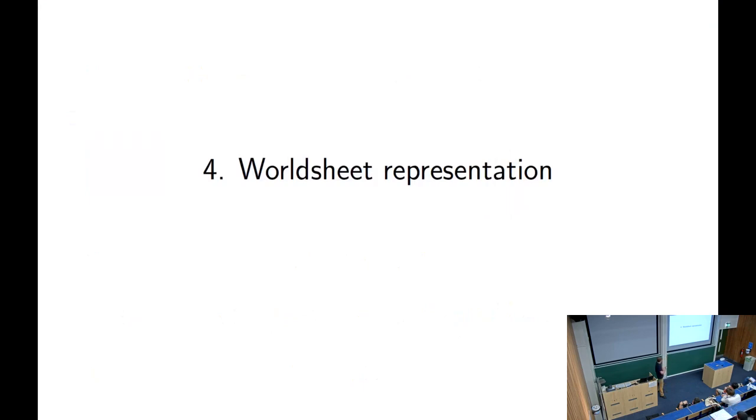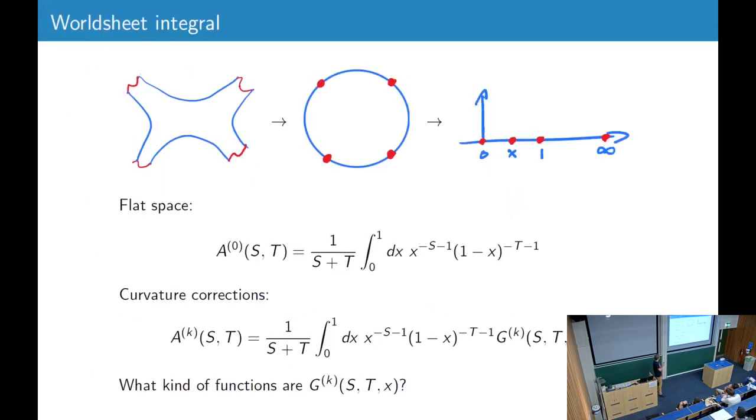Okay. Now we can come to the worldsheet representation. So we have this open string worldsheet. We can conformally map it to a circle with insertion at the boundary or to the upper half plane with insertions on the real line. And we can place three operators at 0, 1, and infinity. And then we get this worldsheet integral which is, of course, the Veneziano amplitude. And for the corrections, we expect that we get a similar worldsheet integral with an unknown integrand.